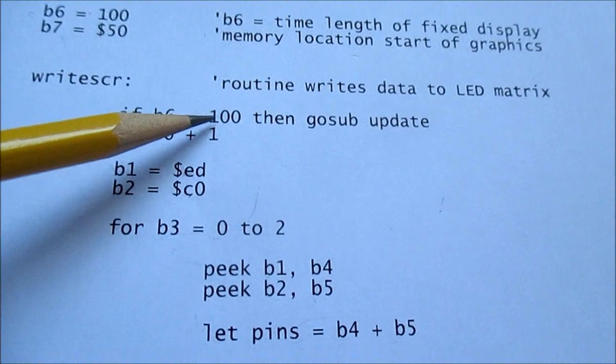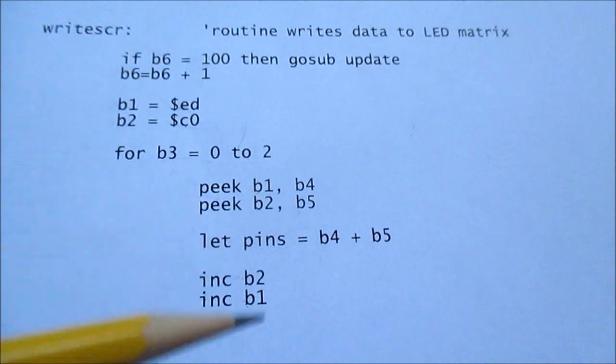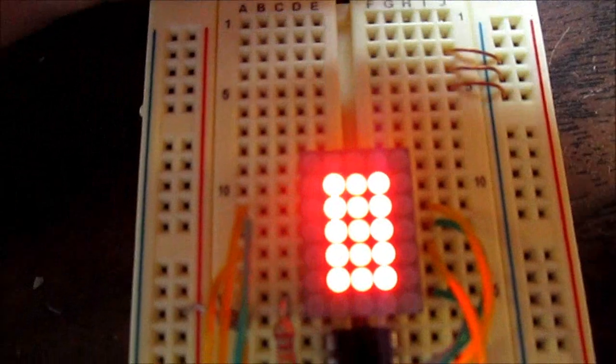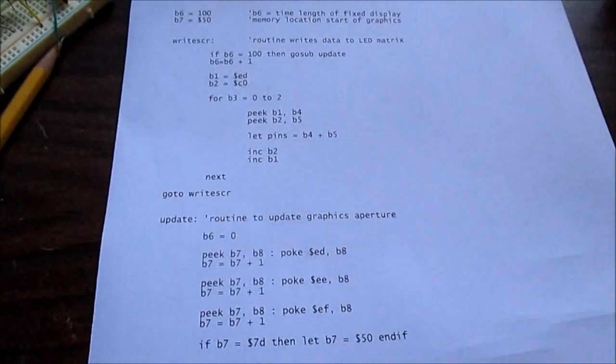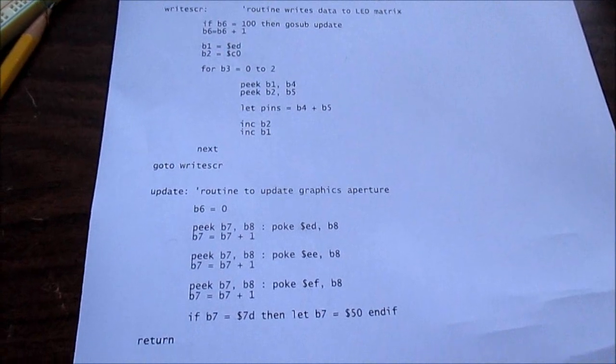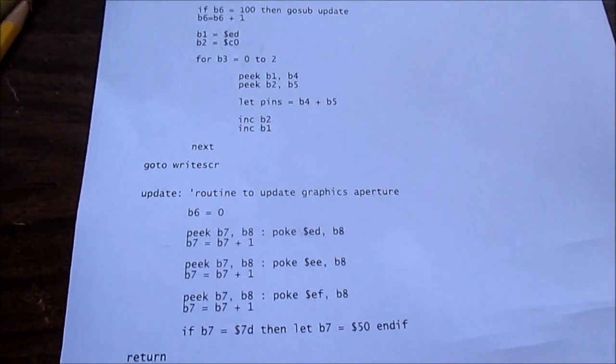So if this hasn't reached 100, it'll run through this again, and it runs through real fast. And that's what strobes the data out to the LEDs. So that's it, just a little bit of code there. That's all it takes.